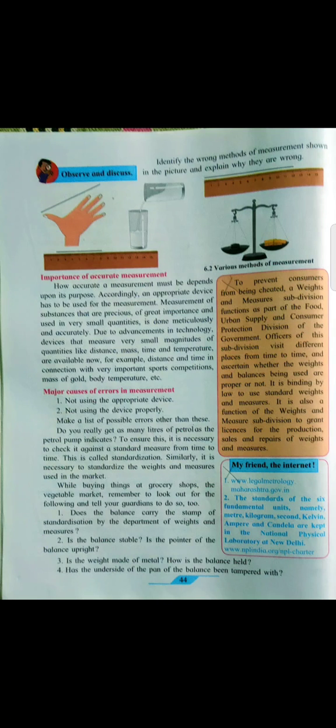There are few images shown on page number 44. One hand span, two glasses half-half of milk, two scales and a weighing balance. Why are these needed?